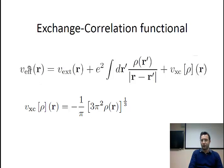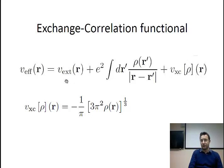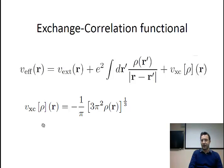This effective functional is described in terms of three members. The first is given by an external potential — for example, the potential produced by the ions in your system. Then you have the electrostatic potential as seen by the electrons, sometimes referred to as the Hartree term. And finally you have the exchange-correlation potential, or exchange-correlation functional, because it is a functional defined over the space of densities. Given the electronic density, you apply the exchange-correlation potential to get a potential defined over a particular point in space.